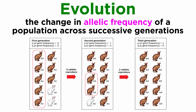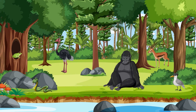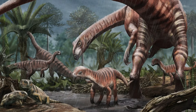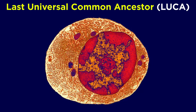Evolution is generally described quite simply as a change in the allelic frequency of a population across successive generations. It is the foundation of biology in that it ultimately explains all of the biodiversity we see today, and throughout the distant past, leading back to a universal common ancestor.